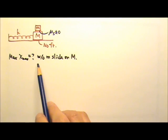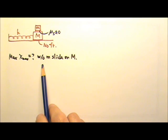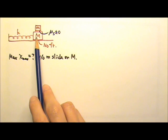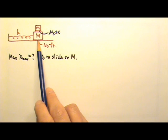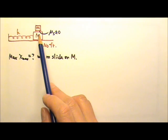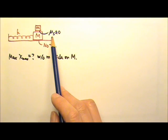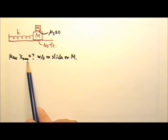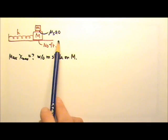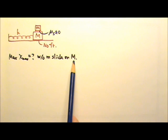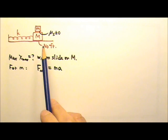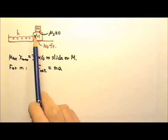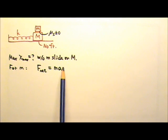We have also done some more complicated spring-mass oscillator problems. Here we have a spring with constant k attached to a box of mass big M, with a little m sitting on top of big M. There is no friction between the ground and big M, but there is friction between the two boxes, with coefficient of static friction mu-s. Find the maximum amplitude of oscillation we can set this system into without having little m slide on big M.